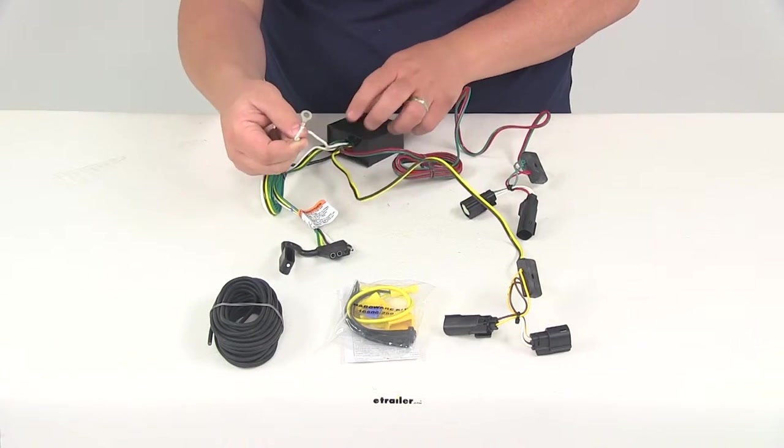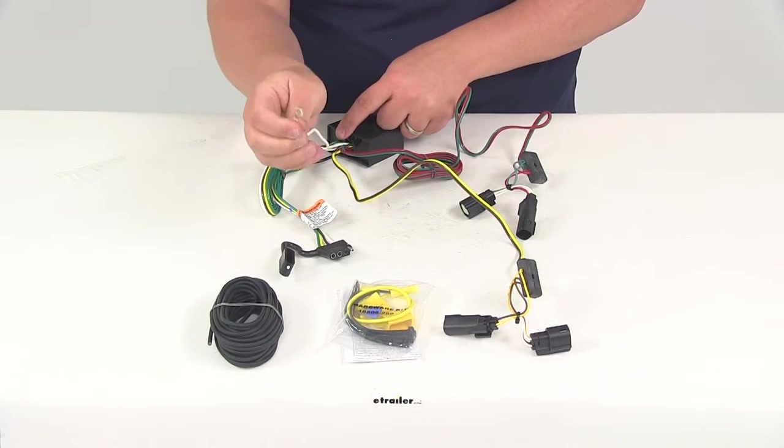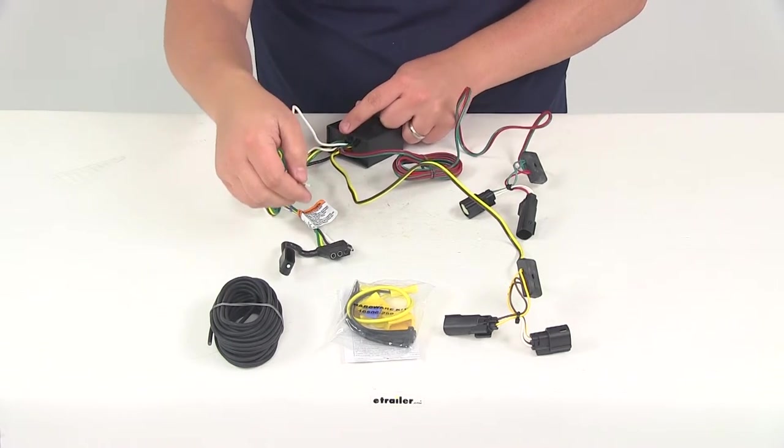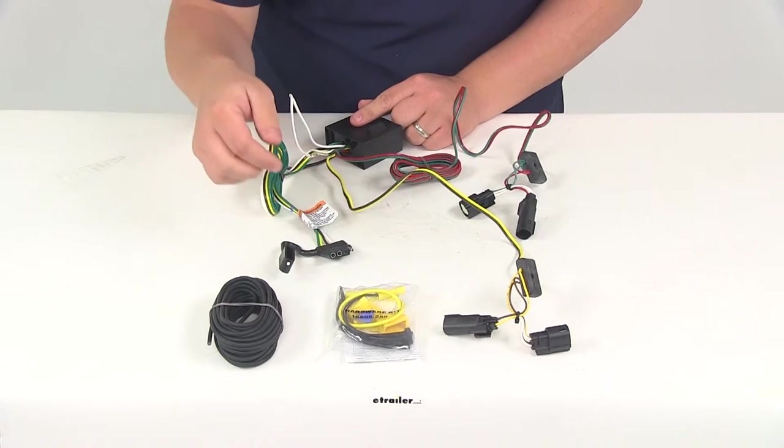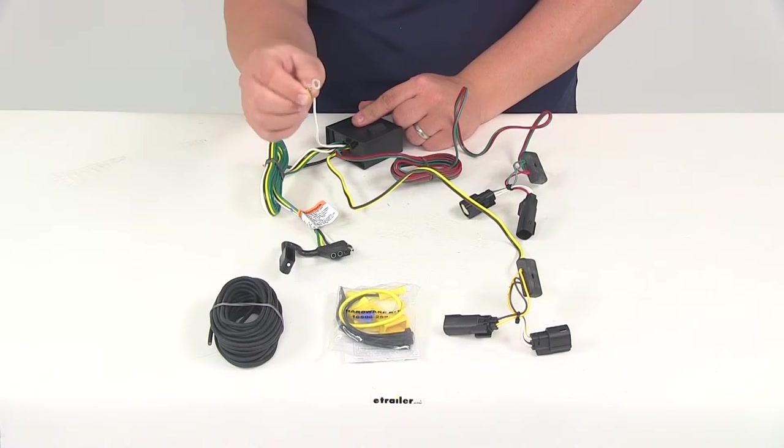It's going to have a white wire come out of the box with a ring terminal attached to it. This is going to be your ground connection. It's going to come with a self-tapping screw you want to make sure to get that secured to a nice clean surface for a solid ground connection.